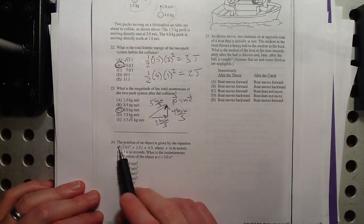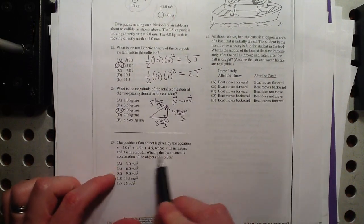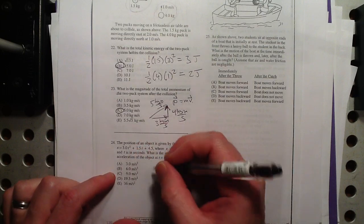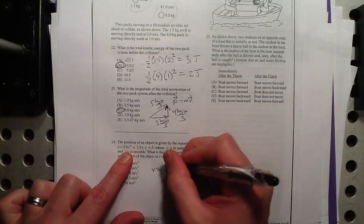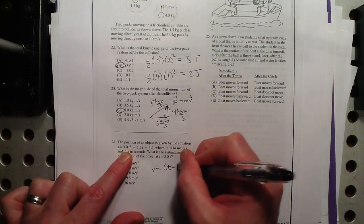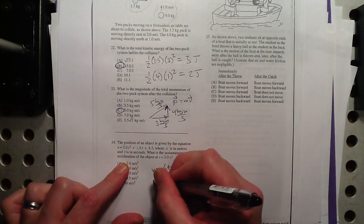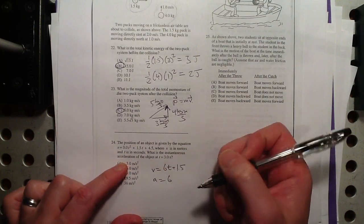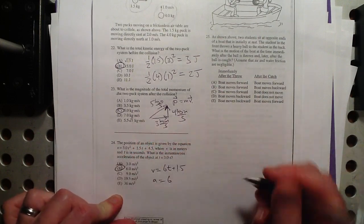Number 24, position is given by this. They want acceleration, so let's see. Velocity would be the derivative of that. 6t plus 1.5. And then acceleration would be just 6. Hey, that was fun.